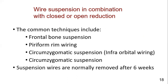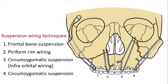Suspension wires are normally removed after six weeks. In the diagram, the following can be seen: frontal bone suspension, piriform aperture wiring, circumzygomatic suspension, and infra-orbital suspension wiring — so named because it involves the infra-orbital region, while the circumzygomatic suspension runs along the zygomatic bone.